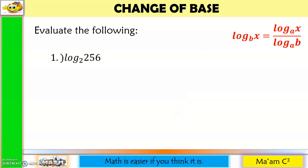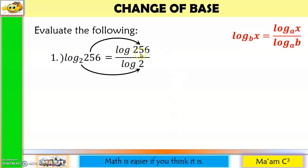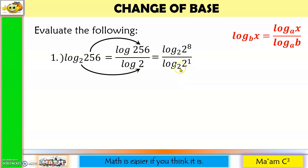Let us evaluate the following. Number 1: the logarithm of 256 to the base 2. So this will become the logarithm of 256 divided by the logarithm of 2. I'm going to express 256 as 2 to the 8th power, and I'm going to choose 2 as my base, so that my x and b will be the same. This will become the logarithm of 2 to the 1st power to the base 2. Now I have the same bases. By the property of logarithm, if your x and b are the same, the answer is the exponent of your x. So the numerator is 8 and the denominator is 1, and 8 divided by 1 is equal to 8.